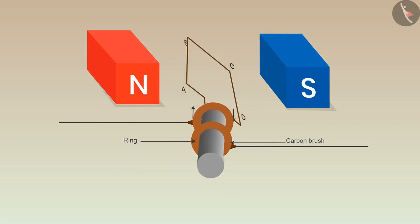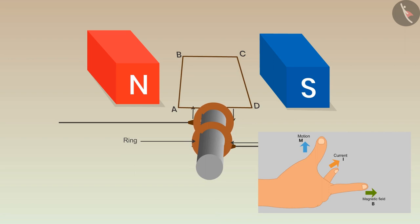Rotate the coil in clockwise direction with the help of an axle. Then use Fleming's right hand rule to find out the direction of the induced current. The axle is rotating in clockwise direction. That means arm AB would have a motion in upwards direction, which can be represented by the thumb.